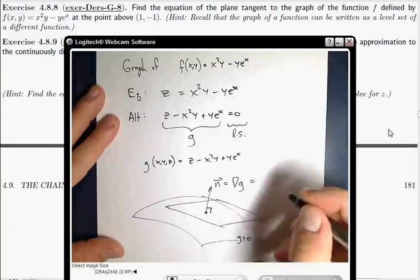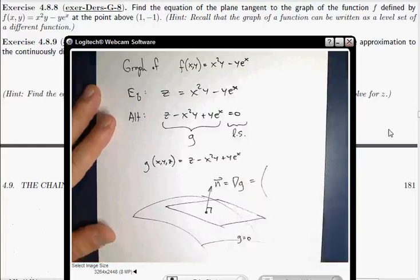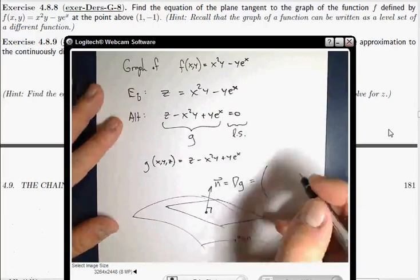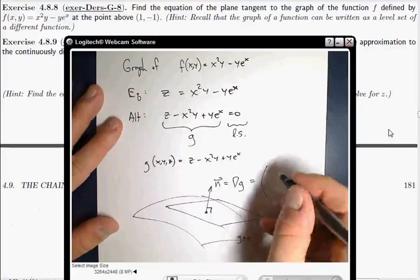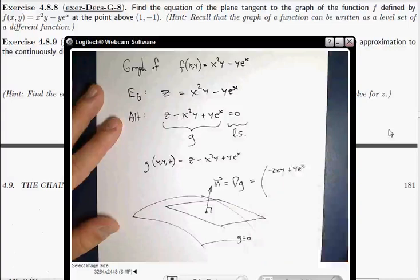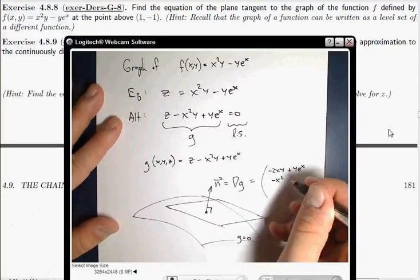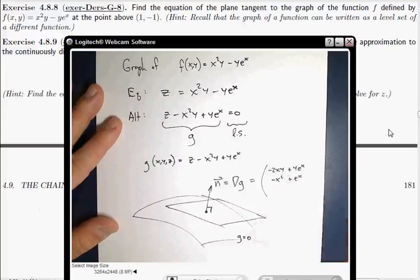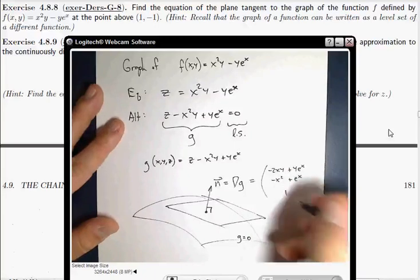So now it's just algebra. The gradient of g, I can just write that down. The x partial is negative 2xy plus y e to the x. The y partial is negative x squared plus e to the x. And the z partial is 1.